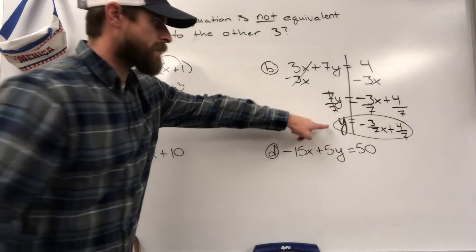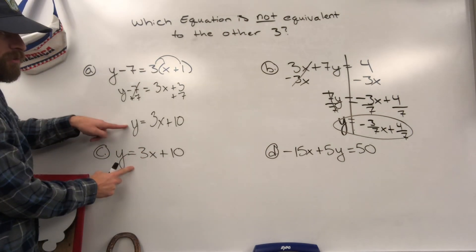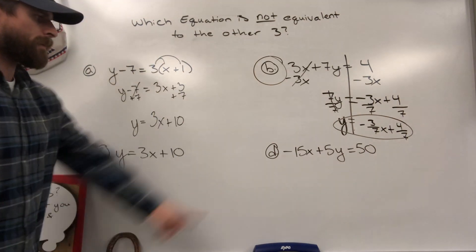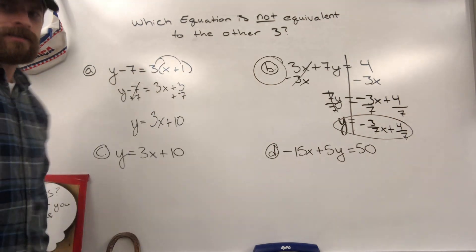This is in slope intercept form, but it looks nothing like these two that are also in slope intercept form. So that tells me our answer is probably c, but I'm going to check d just in case to make sure.